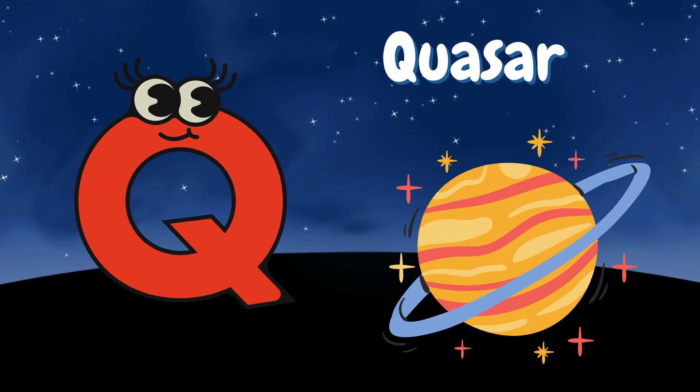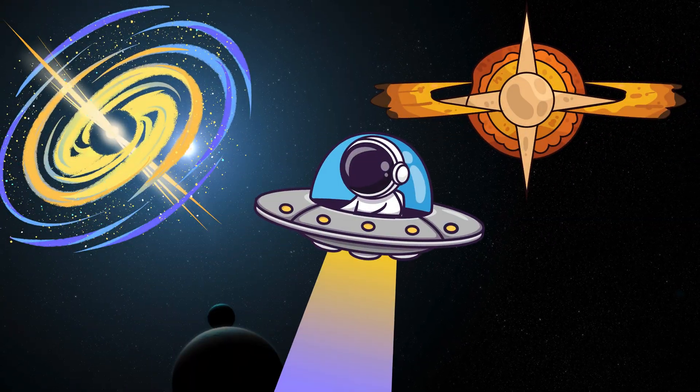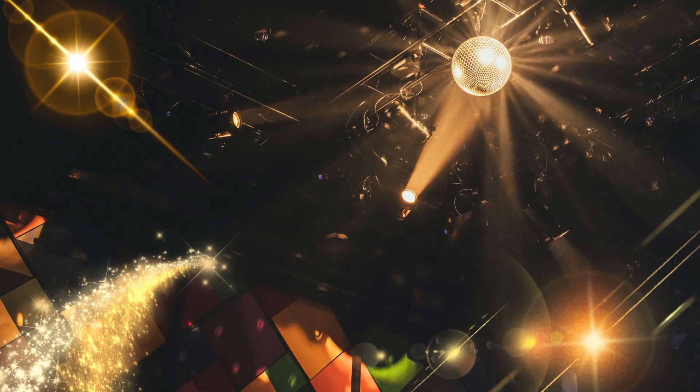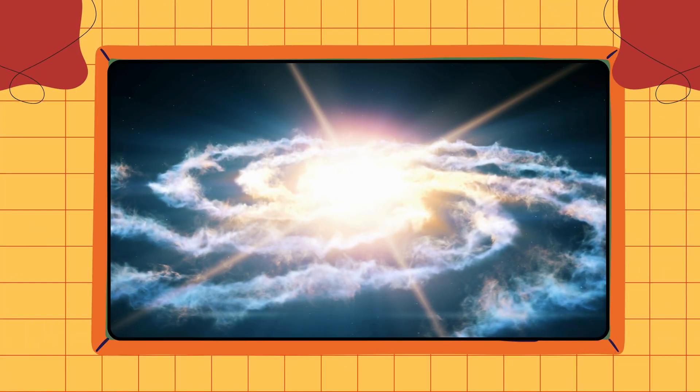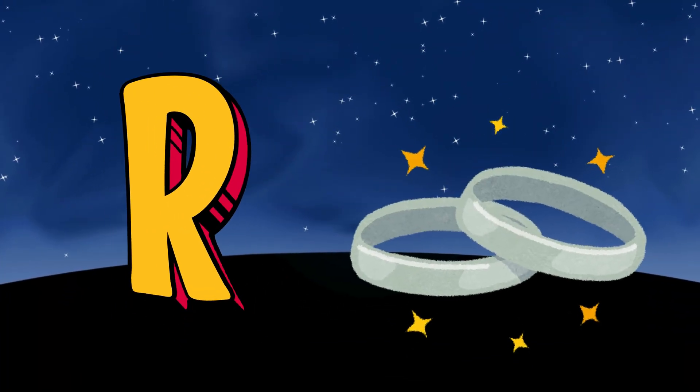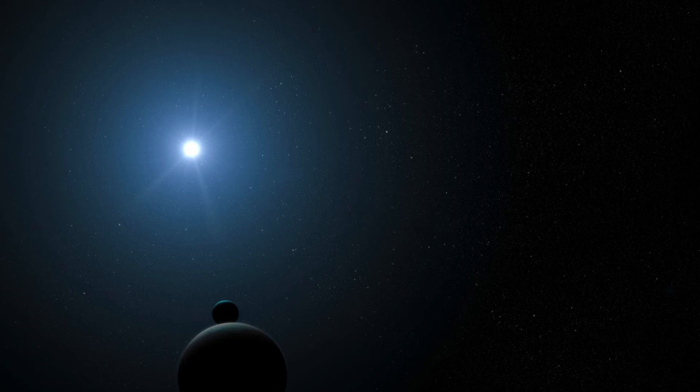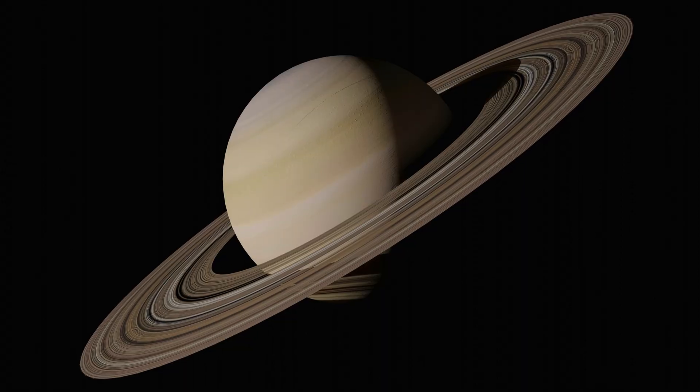Q is for Quasar. Quasars shine brighter than a million suns. R is for ring. Rings are sparkly belts made of ice and dust.